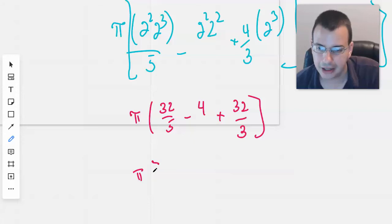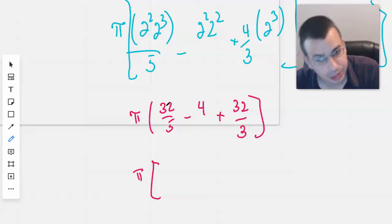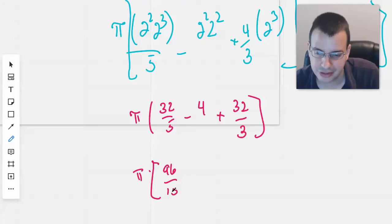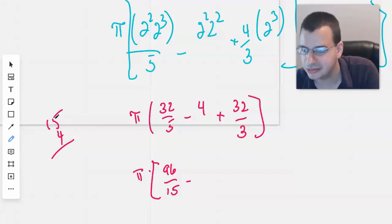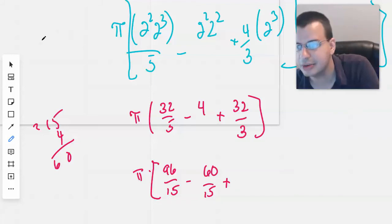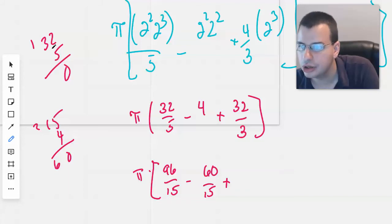And so it looks like a common denominator is going to be 15. So we'll do pi. And let's see here. 32 times 3 is 96. Probably 96. 96 over 15 minus 4 times 15 is what? 60? 0, 2. Yep. Minus 60 over 15 plus 32 times 5 is... And maybe over here. 32 times 5 is 0. 5 times 3 is 15.